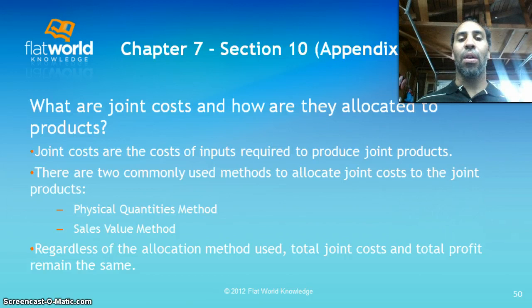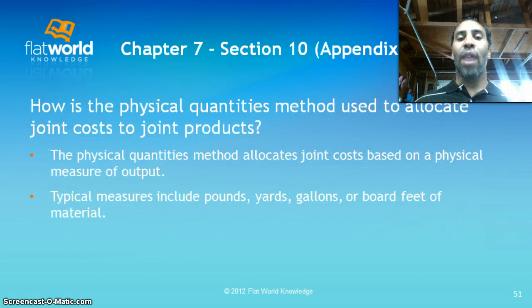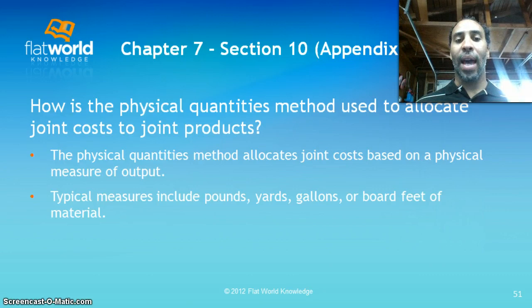Joint costs are the costs of inputs required to produce joint products. There are two commonly used methods to allocate joint costs. Regardless of the allocation method, total joint costs and total profit remain the same. The physical quantities method allocates joint costs based on physical measures of output — for example, if you produce 60 skateboards and 40 desks out of 100 units, that's how costs are allocated. Typical measures include pounds, yards, gallons, or board feet of material.